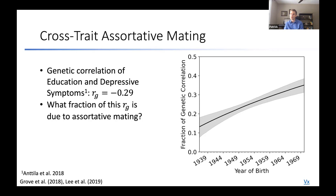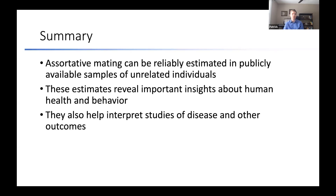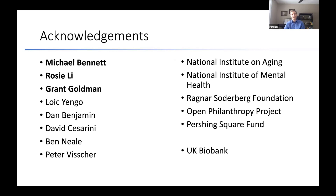In summary, I showed a method that I think is pretty powerful: a way to estimate assortative mating in large samples of unrelated individuals. I think these estimates can really help us think about human behavior and how we should interpret the kinds of results we're producing and consuming. Thanks — this has been a project done with many collaborators, and I especially want to thank Michael Bennett, Rosa Lee, and Grant Goldman, research assistants who helped out on this project.